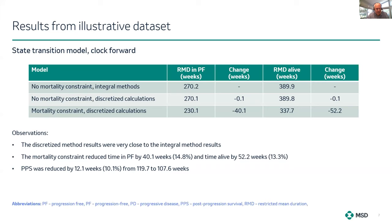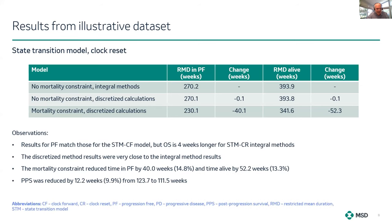Then applying the mortality constraint reduces the progression-free estimate by 40 weeks and the time alive by 52 weeks. So in this model structure, the effect of the mortality constraint is pretty substantial. Looking at the clock reset approach, we see very similar results.